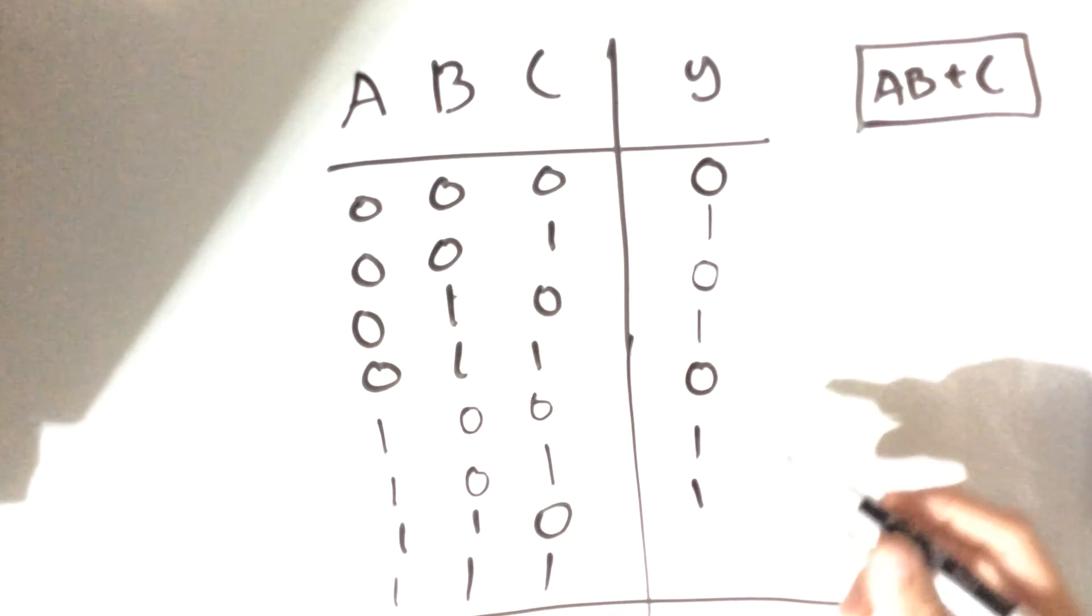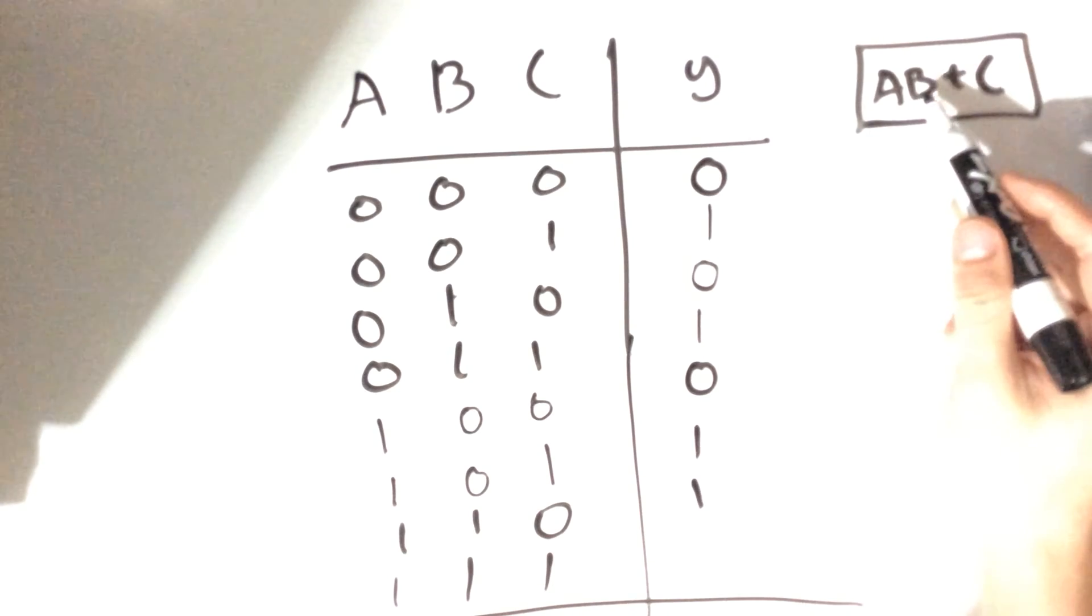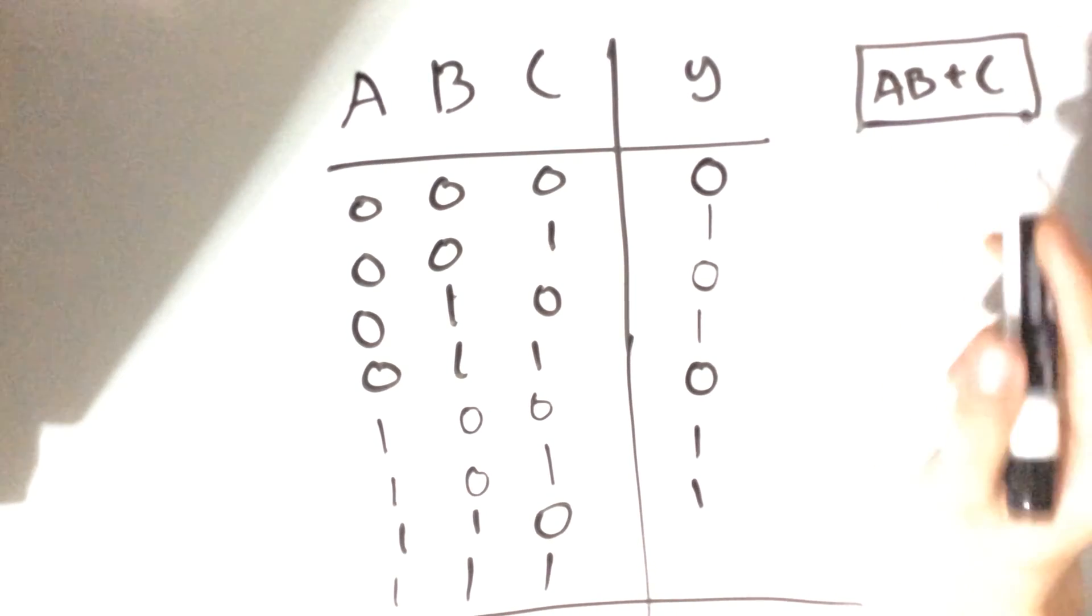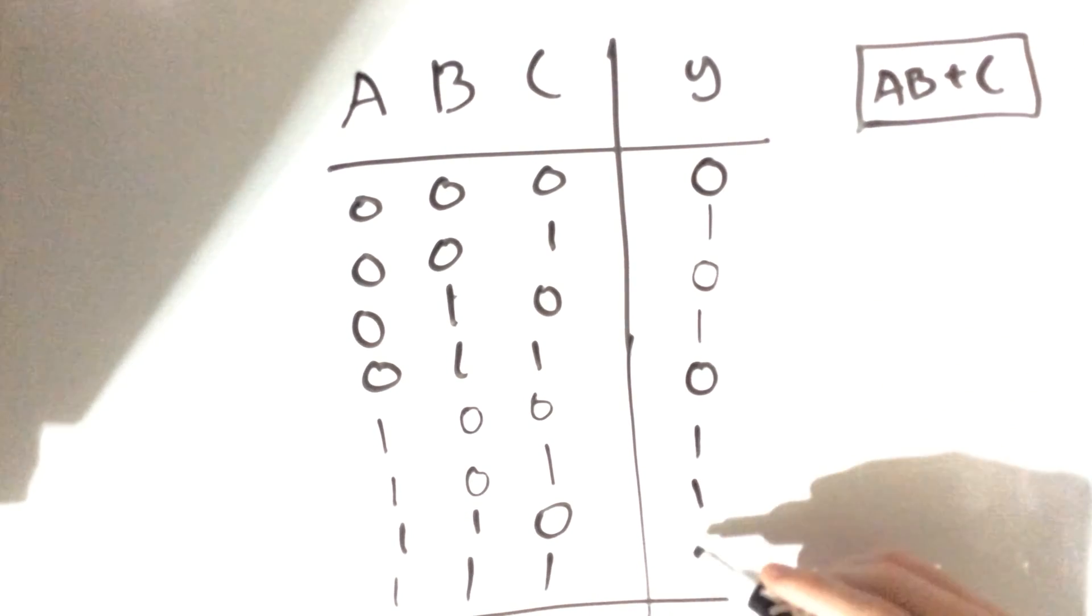And lastly, all of these is 1. If C is 1, it's going to give us the value of 1. If you work this out, A and B is going to give us the value of 1, or 1 is still going to give us the value of 1. This is how you would go about drawing a truth table for a combinational circuit.